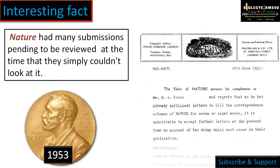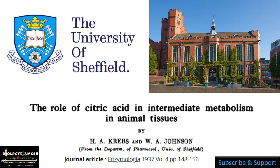Hans Krebs was a German-born biologist who moved to England as a Jewish refugee during Hitler's time. He joined the University of Sheffield, and the title of his paper was 'The Role of Citric Acid in Intermediate Metabolism in Animal Tissues.' He published this paper along with his student William Johnson from the Department of Pharmacology, University of Sheffield, in the Dutch journal Enzymologia in 1937.